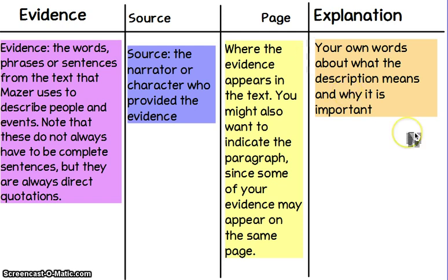And in the explanation column, which is a very important column because this is in your own words, you're going to write what the description means and why it's important — basically how your evidence is showing something about the character and how it's being used by the author to create characterization.